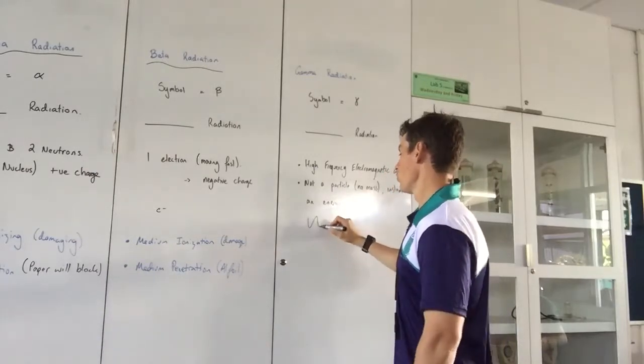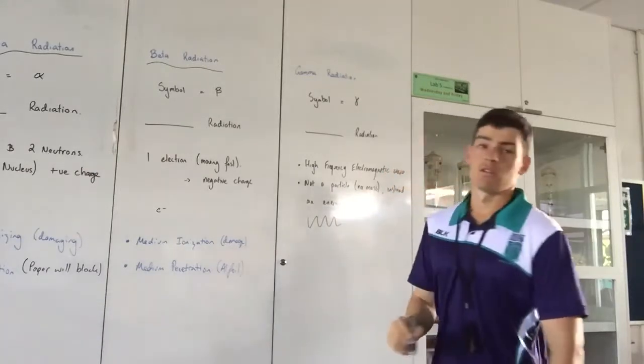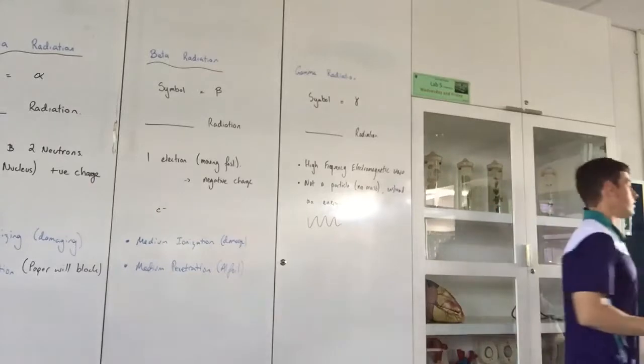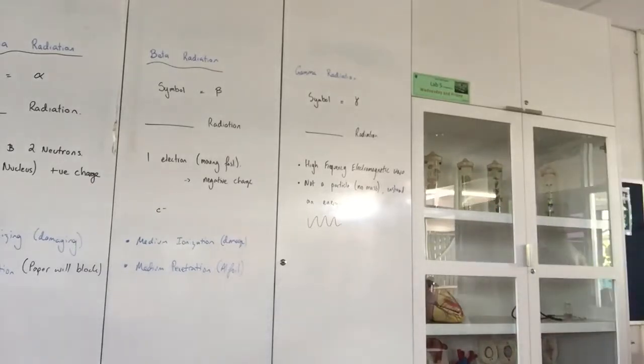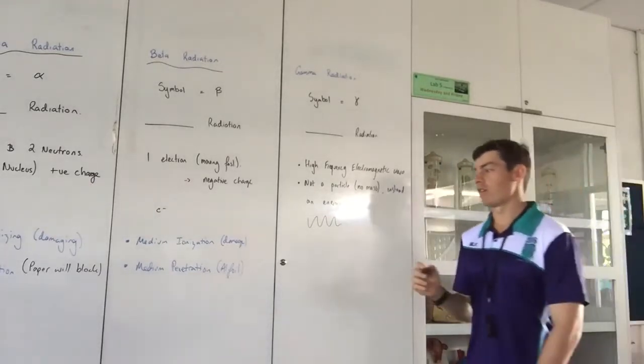Instead an energy wave. One draw. That's a very oversimplified. All these models are oversimplified. But a very oversimplified version of gamma radiation.